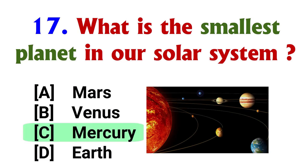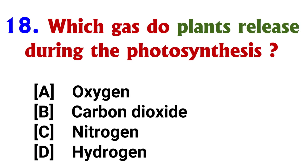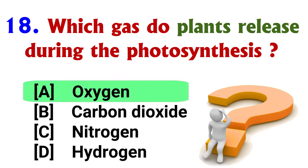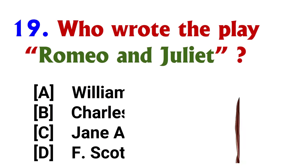Who painted the Mona Lisa? Answer: option C, Leonardo Da Vinci. What is the smallest planet in our solar system? Answer: option C, Mercury.